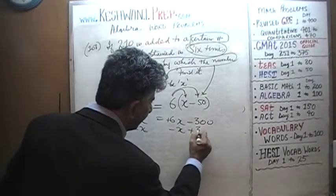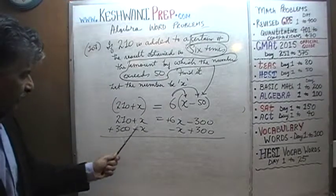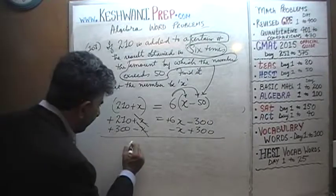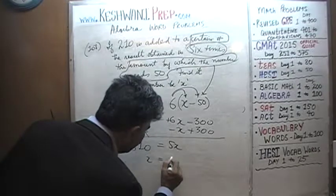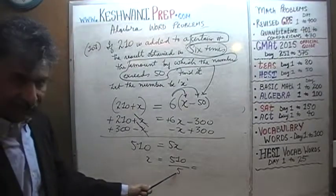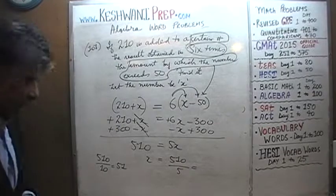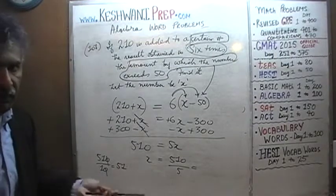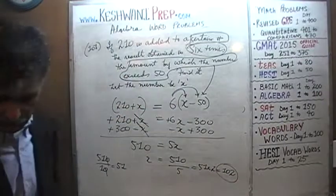And let's bring 300 to the left side by adding 300 to both sides. The positive x and negative x cancel, leaving 210 plus 300, which is 510, equal to 6x minus x, which is 5x. Therefore x equals 510 over 5. Since 510 divided by 10 is 51, then 510 divided by 5 is twice as much — 51 times 2 — which is 102. x is 102.